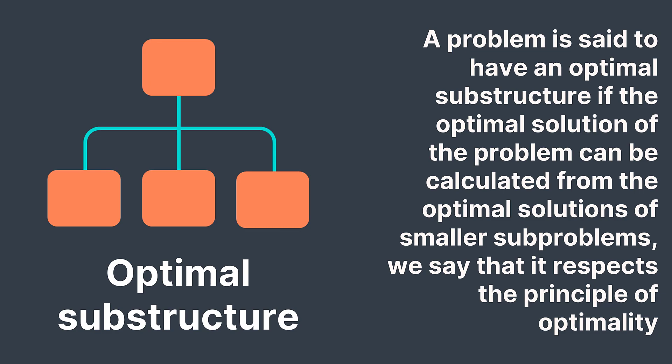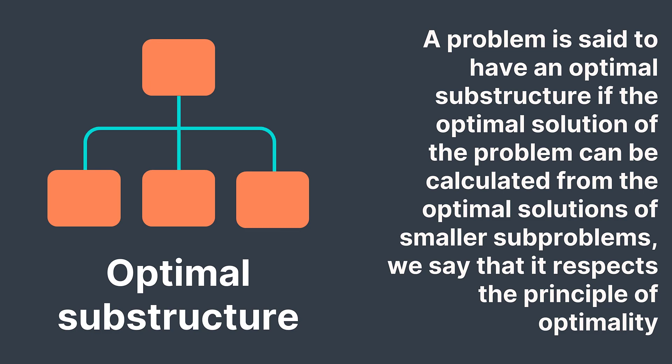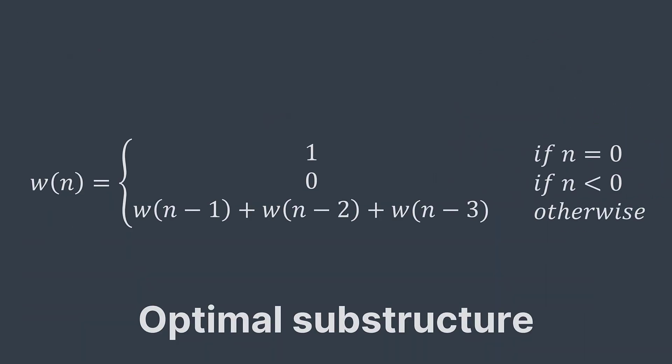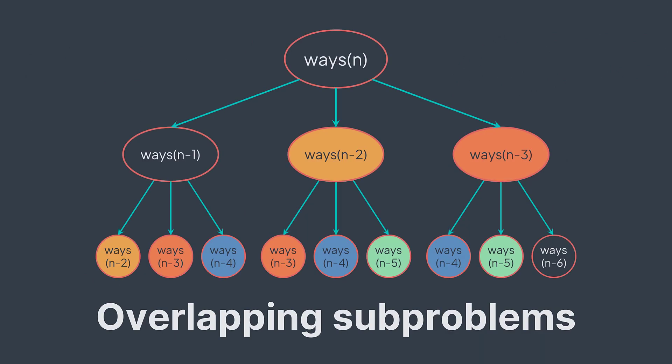The second property is overlapping subproblems. A problem is said to have overlapping subproblems if, during the recursive process of dividing it into subproblems, we solve the same subproblem more than once. If these two properties are present in a problem, we can likely think of using dynamic programming — like with the previous example, which has optimal substructure because we can calculate ways of n from ways of n minus one, n minus two, and n minus three, and has overlapping subproblems as seen in the recursion tree.